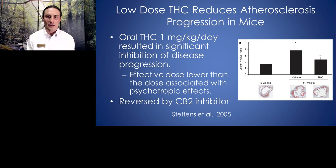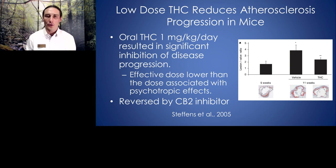In a rodent study, mice that produce atherosclerotic lesions were given oral THC at a modest dose of 1 milligram per kilogram per day. After five weeks, you can see that the vehicle group that did not receive THC had plaque lesions inside the arteries grow quite a bit, whereas the THC group only grew a little over the next six weeks. When researchers also administered a CB2 blocker, there was no benefit with THC — showing that THC was likely working via the CB2 receptor.